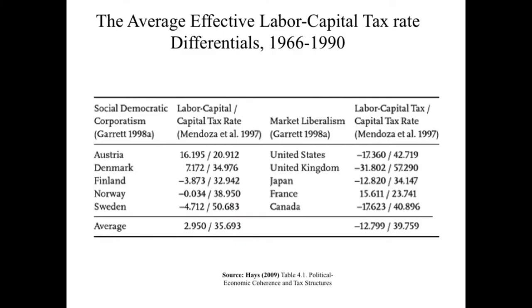There are demands for social protection, but it remains low in the United States. What should the government do? The US government may want to increase social protection. However, globalization limits the US government's ability to increase tax revenues for redistribution. US tax revenues are mostly dependent on capital taxes rather than labor taxes. And globalization limits the US government's ability to increase capital taxes. This table shows the average effective labor-to-capital tax rate differentials in industrialized countries. The United States has a differential of minus 17, meaning the United States depends more on capital tax rates than labor taxes.